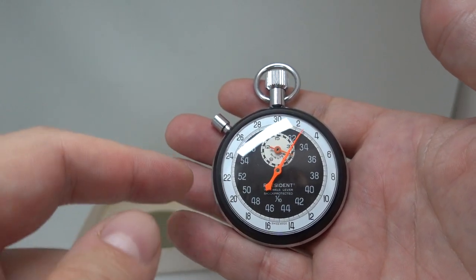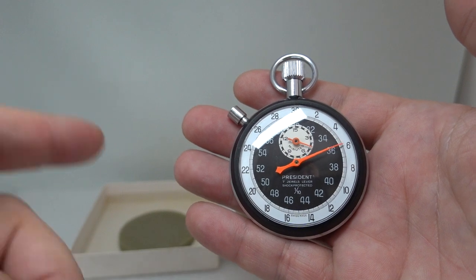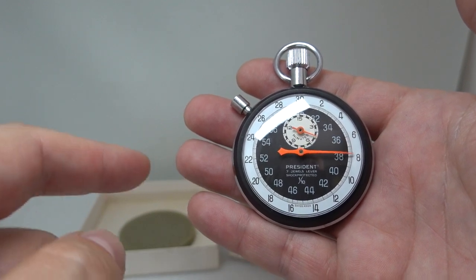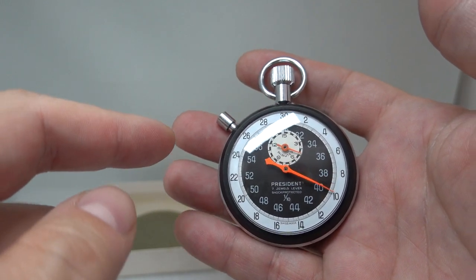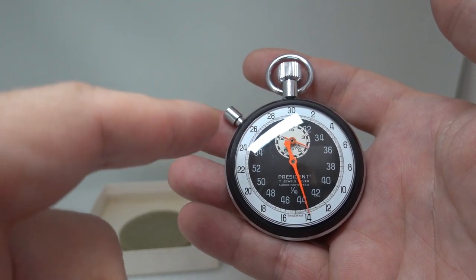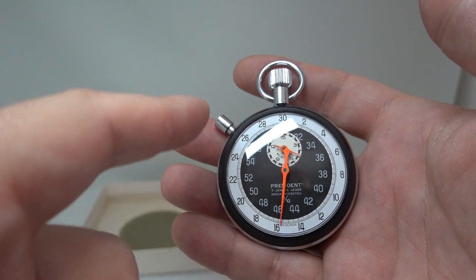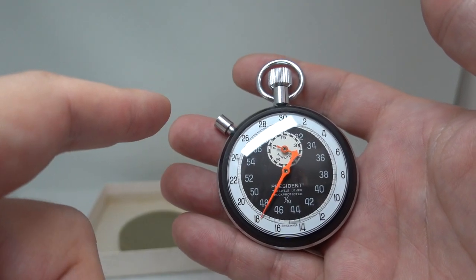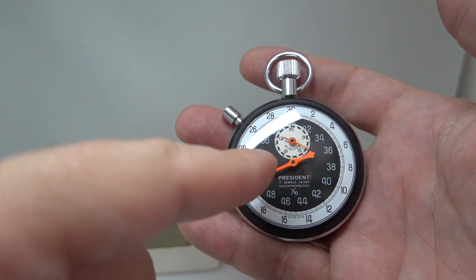When they say one-tenth of a second, the movement in this actually beats every other tenth of a second, five times a second. So in order to get it to read tenths, it goes around the dial twice. At the moment it's reading the white numbers, so it's going to come around to 30, then this counter here is